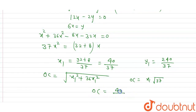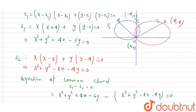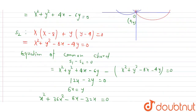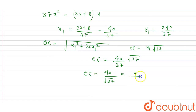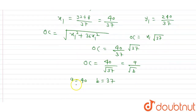So x equals 40 divided by 37, and with the square root of 37 cancelling, the result is 40 divided by square root of 37. This is equal to a divided by square root of b. Comparing, a equals 40 and b equals 37. Therefore b minus a equals 37 minus 40, which equals minus 3. So this is our answer. Thank you.